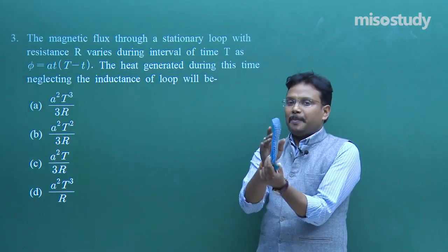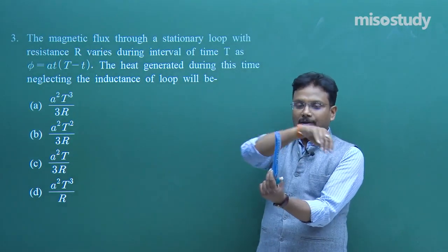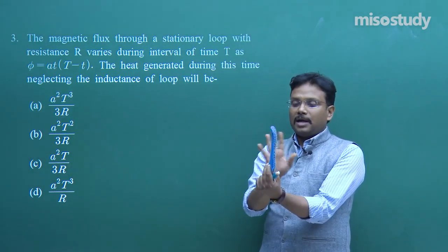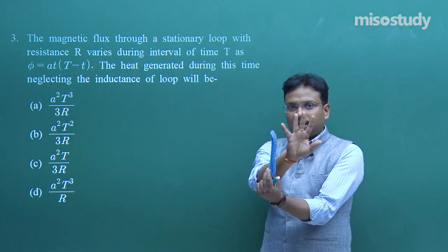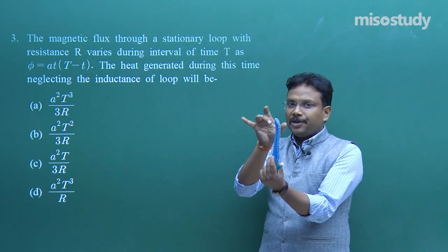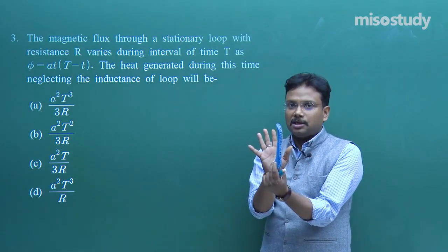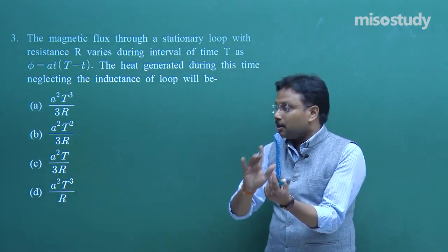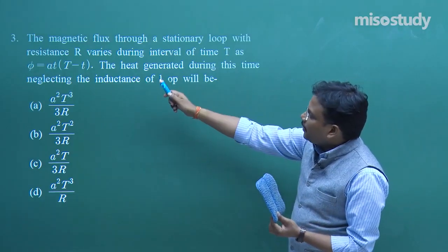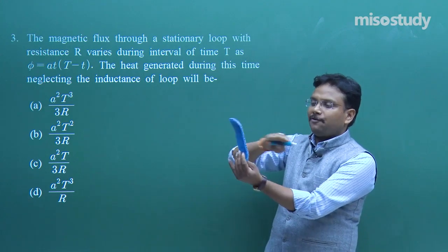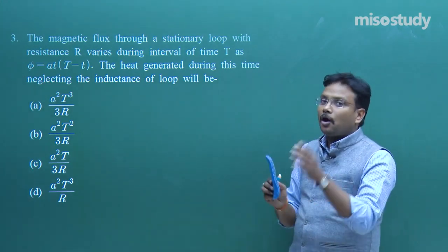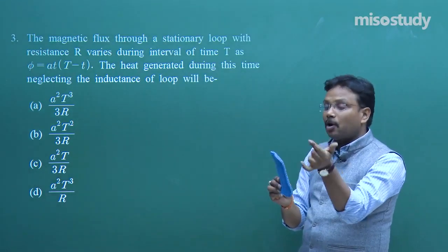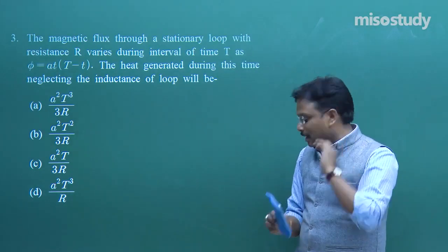Imagine a loop — square, circular, or rectangular — placed in a magnetic field. If the magnetic field magnitude is constant, the area is constant, and θ is fixed, there is no change. But here φ itself is changing, meaning the magnetic field lines are changing. So an induced EMF appears, driving an induced current, which produces heating: H = I²Rt.